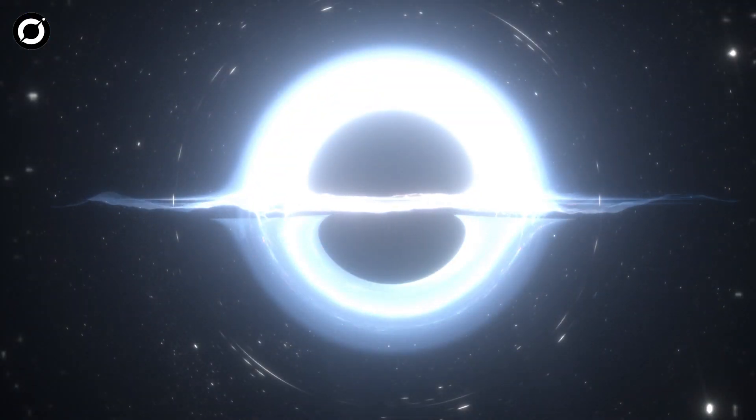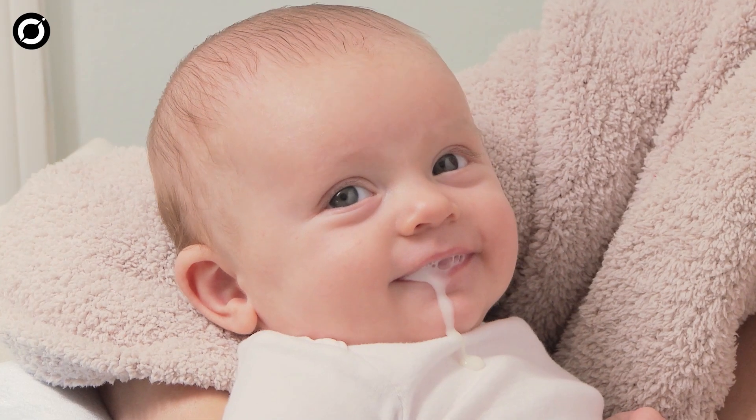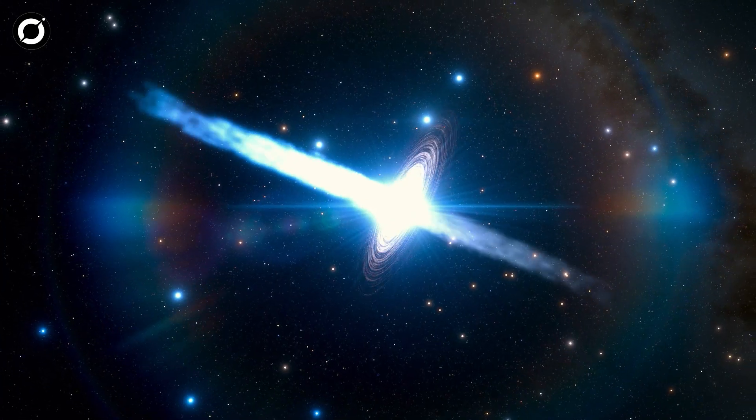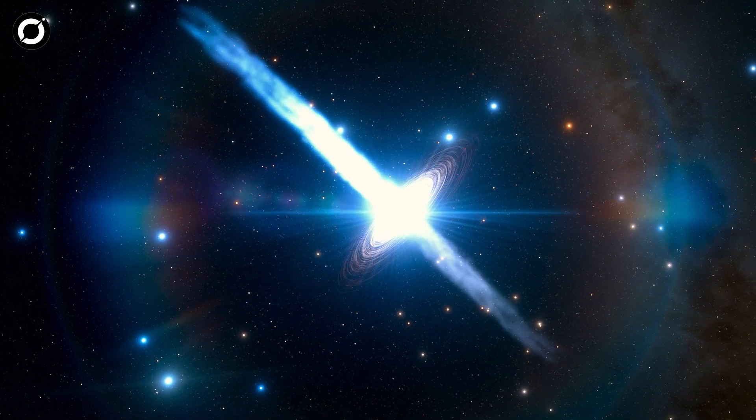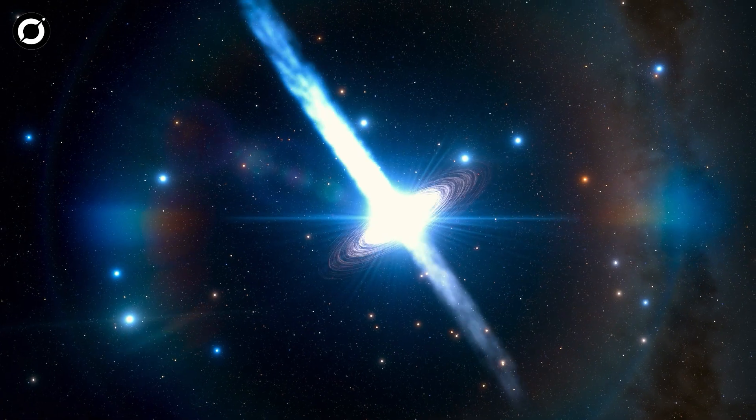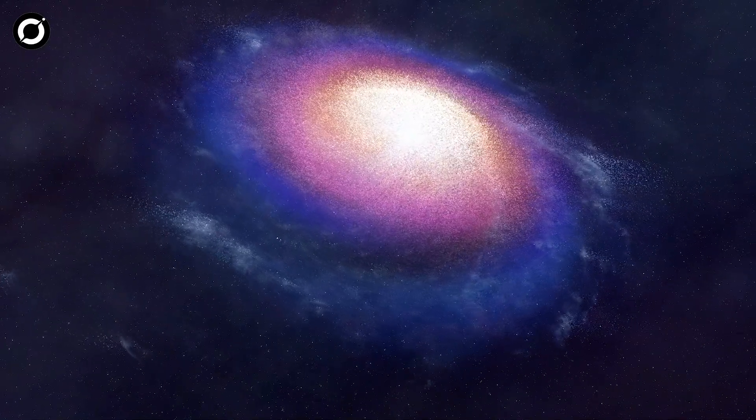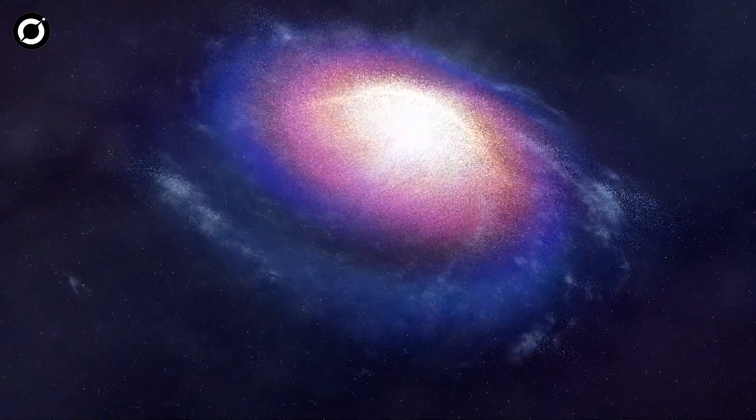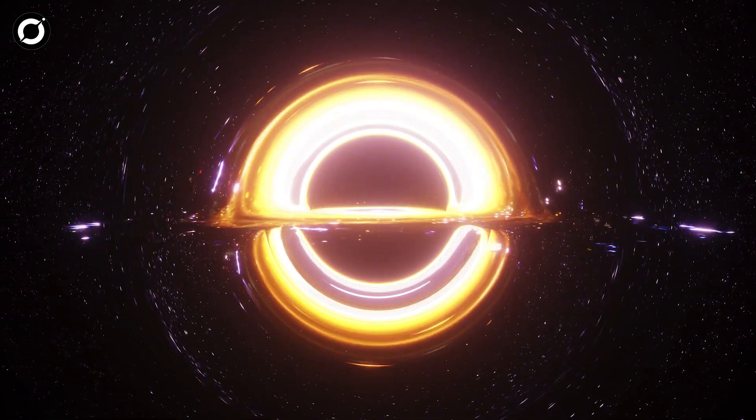Black holes are messy eaters. Like babies. So when they are eating, they are also throwing up material back into the galaxy. This slows down the growth of the galaxy and ends up slowing down the black hole growth as well.